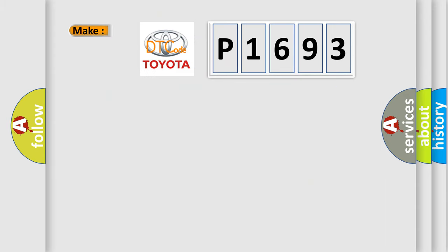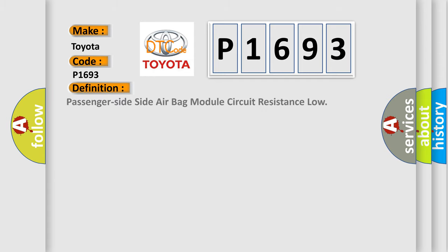We now know what the diagnostic tool translates the received information into. So, what does the diagnostic trouble code P1693 interpret specifically? For Toyota, the basic definition is: Passenger side airbag module circuit resistance low.